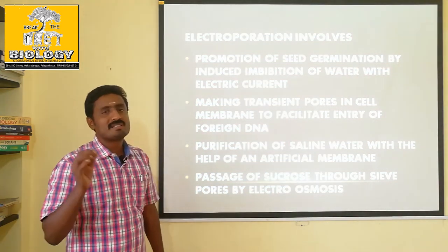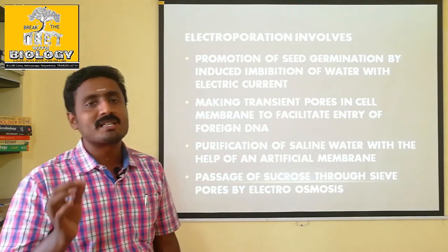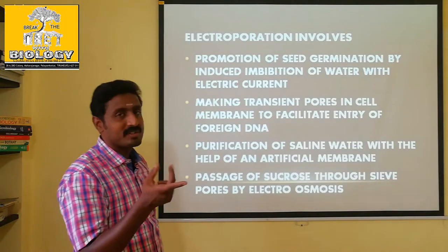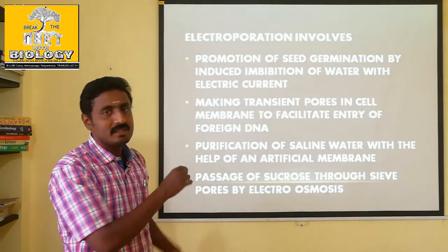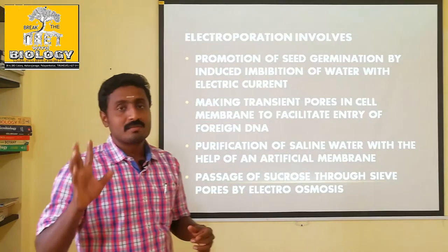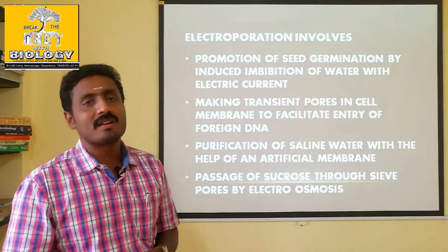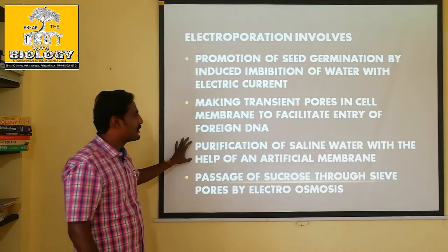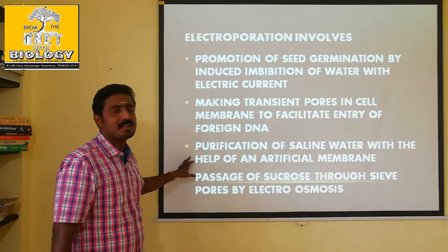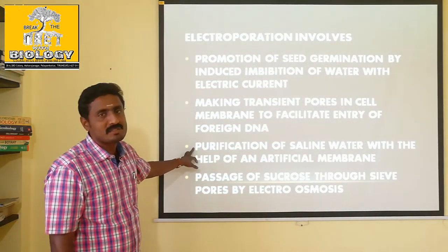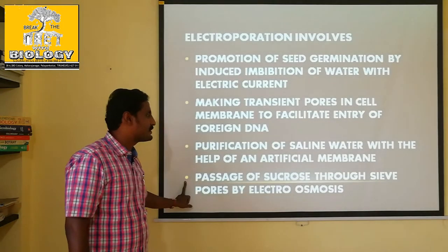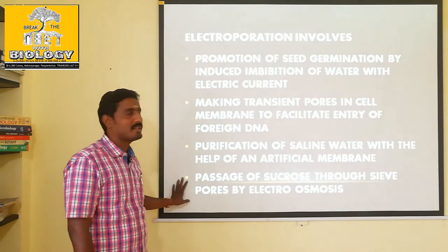The membrane is selectively permeable — it is permeable and there are pores. There is a diagram in the next slide. Also, purification of saline water with the help of an artificial membrane using the RO system — reverse osmosis technique — is the same concept. Passage of sucrose through these pores by electroosmosis is not possible.